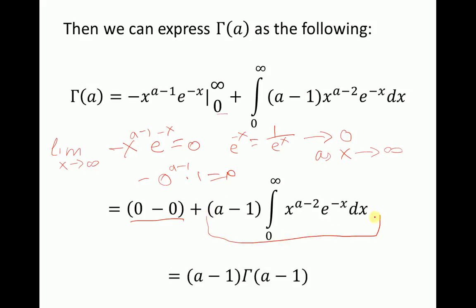It is easy to see that the remaining integral is just gamma of alpha minus 1. Therefore, we have just shown that gamma of alpha equals alpha minus 1 times gamma of alpha minus 1.